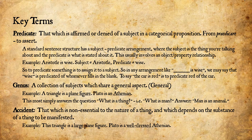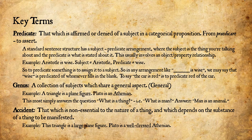The first term is 'predicate.' The predicate is that which is affirmed or denied of a subject in a categorical proposition — from the Latin 'predicare,' to assert. The predicate is something which is said or denied about something else. A standard sentence has a subject-predicate arrangement. For example, in the sentence 'Aristotle is wise,' Aristotle is the subject and 'wise' is the predicate.